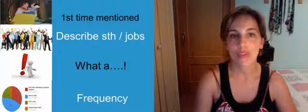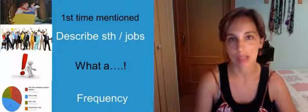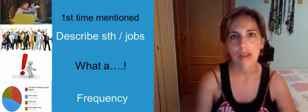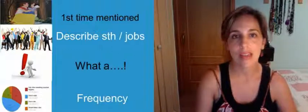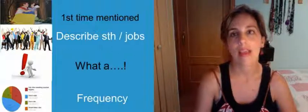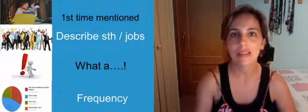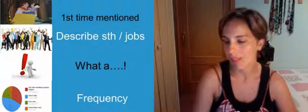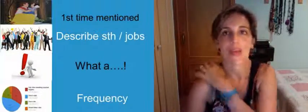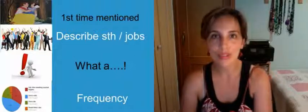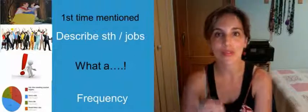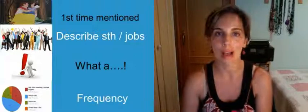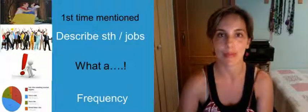Then when we are describing something, we use a as well. So you can say, what is a computer? And you say, a computer is a machine. Or, what is an orange? You can say an orange is a fruit. So in front of fruit, in front of machine, you are using a because you are describing something.